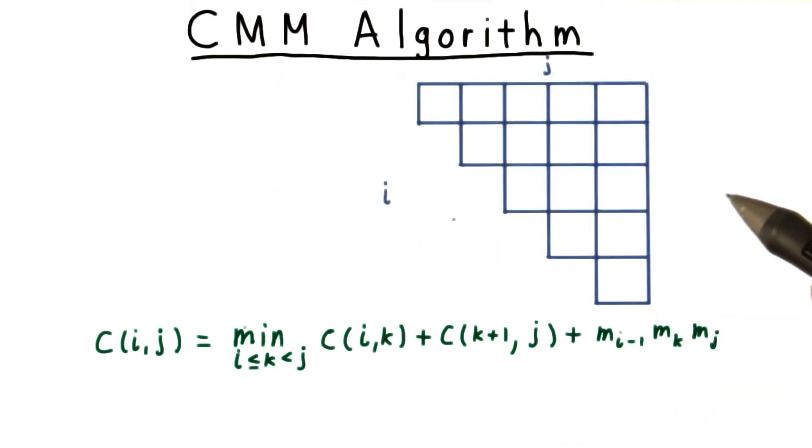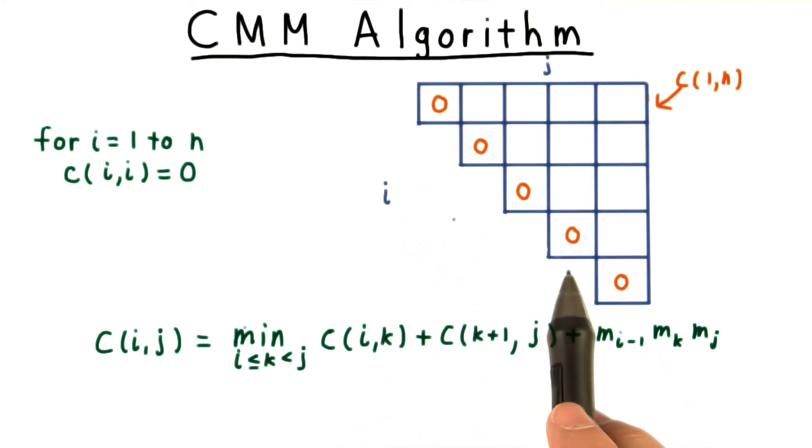Fortunately for us, there are only n choose 2 subproblems, so we can create a table and do the subproblems in the right order. The entries along the diagonal are the base cases, which have cost 0. The product of one matrix doesn't cost anything.